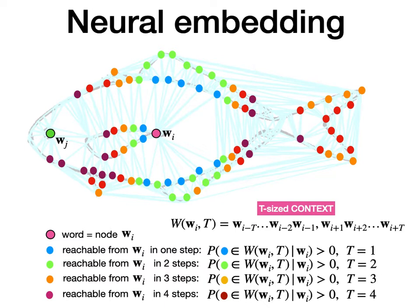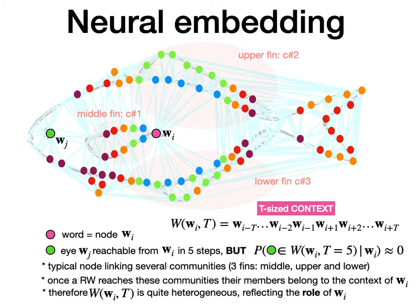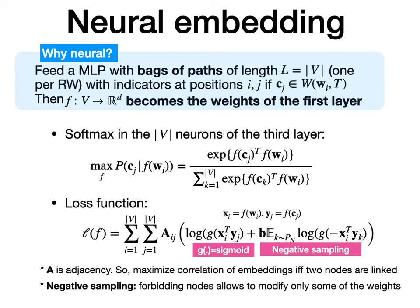The basic idea of these embeddings is that from a starting node, in one step of the random walk you reach the blue nodes, in two steps the green nodes, in three steps the orange nodes, and so on. You take many random walks starting from different nodes and take statistics. The goal of this approach is to preserve the structure of the original graph. It is called neural because what we want to do with the bag of paths of a given length is to maximize: given a node w_i, what is its context? If two nodes appear frequently together, they belong to the same context, meaning from w_i you will frequently find c_j.